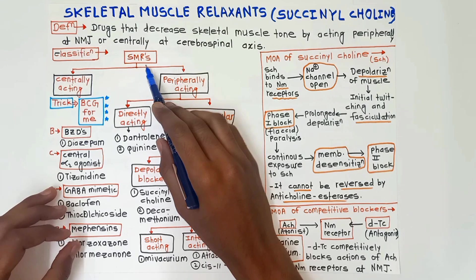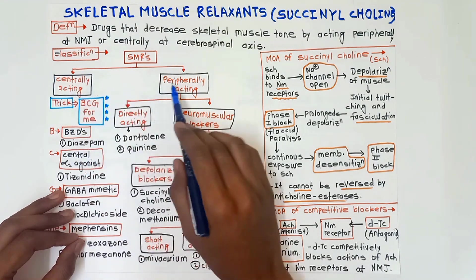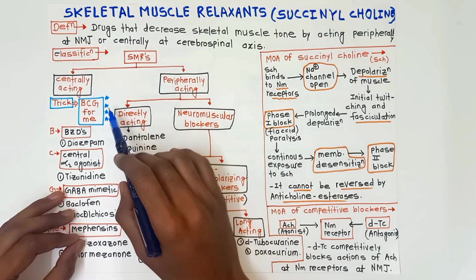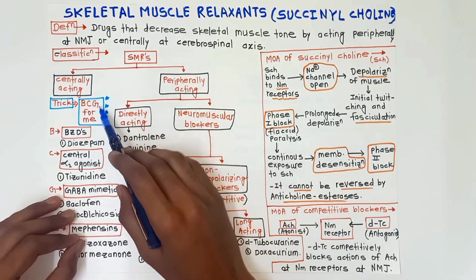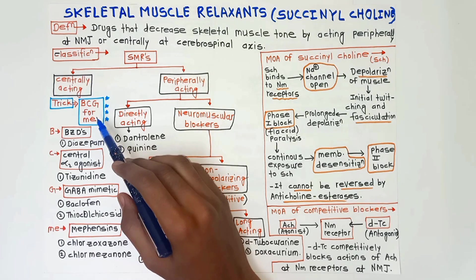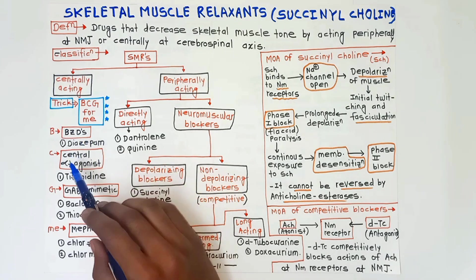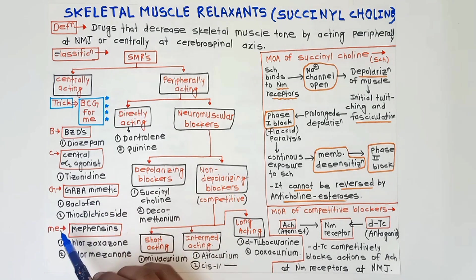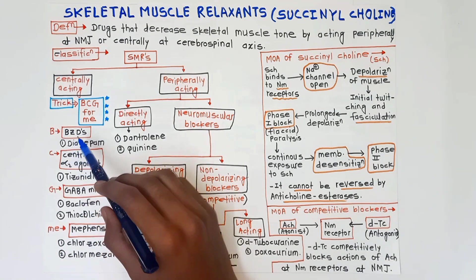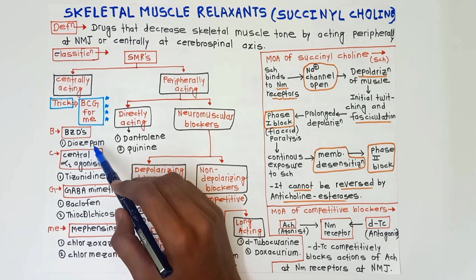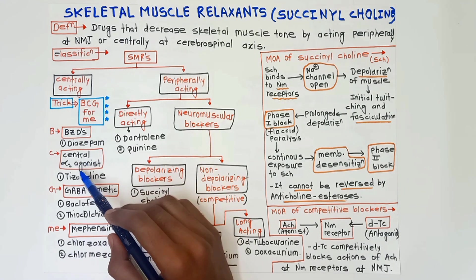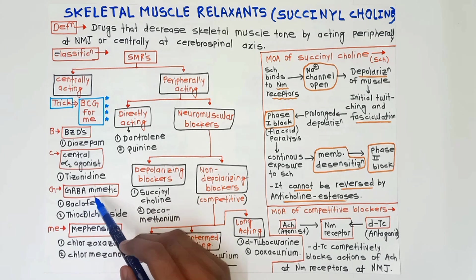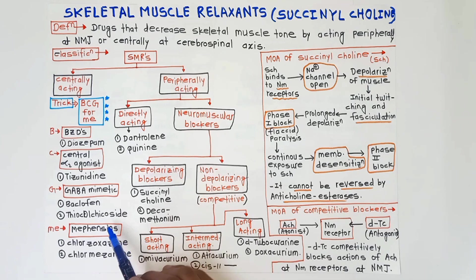For classification, skeletal muscle relaxants are divided into two groups: centrally acting and peripherally acting. For centrally acting drugs, the trick is BCG for me — B for benzodiazepines, C for central alpha-2 agonist, G for GABA-mimetic, and 'me' for mephensins. So: benzodiazepines (e.g., diazepam), central alpha-2 agonist (tizanidine), GABA-mimetic drugs (baclofen and thiocolchicoside).